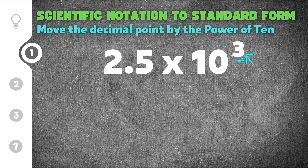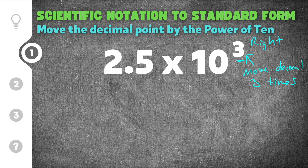This 3 tells us that we move the decimal three times. Because the 3 is positive, the decimal point is going to move to the right. Probably the most confusing thing is remembering which way the decimal point moves. An easy trick is to rewrite this number using 10 instead of the exponent.